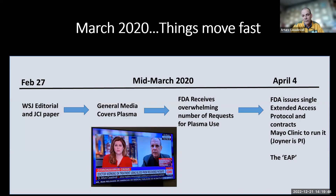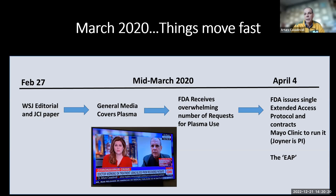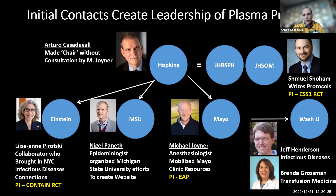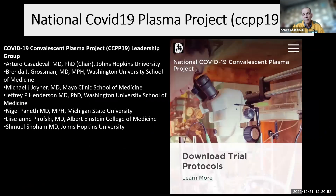The FDA received an overwhelming number of requests for plasma use — there was nothing to give these patients. They created a single access protocol and needed a place with a national IRB, so they contacted the Mayo Clinic to run it, then it became the EAP. This would provide the first evidence of efficacy and safety in the United States. Amazon built the website for us, and the main role of the website was to distribute protocols so that people could have access to all the information.